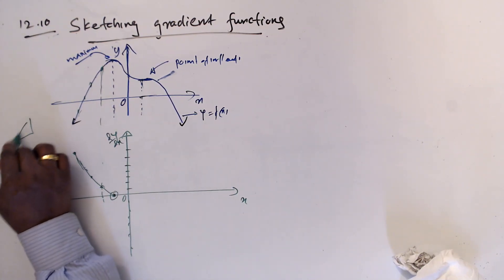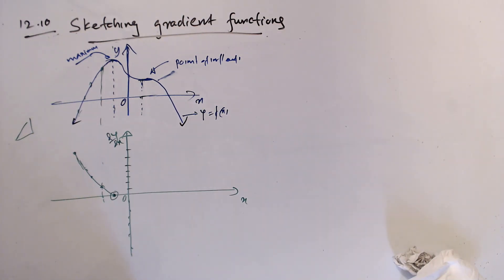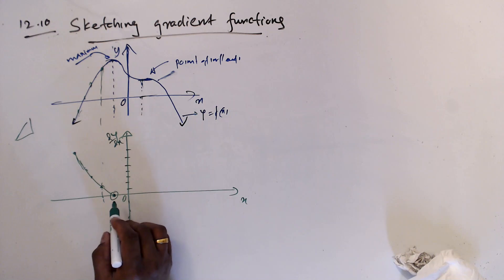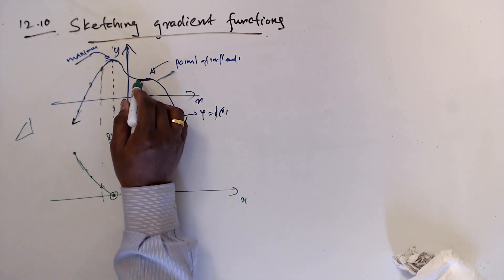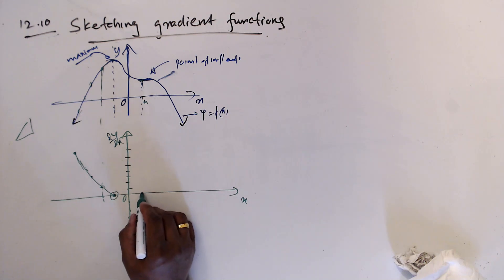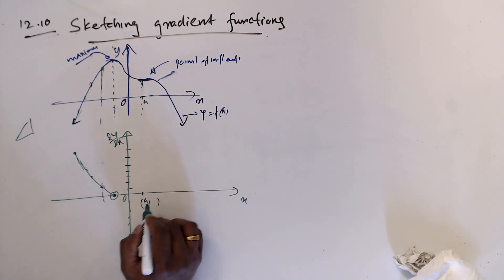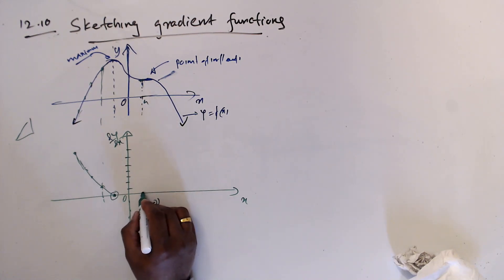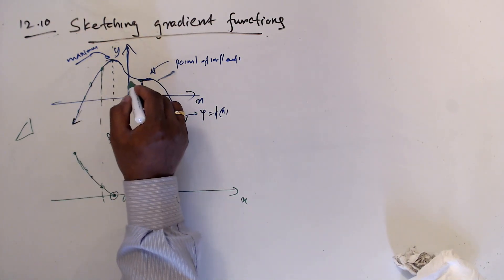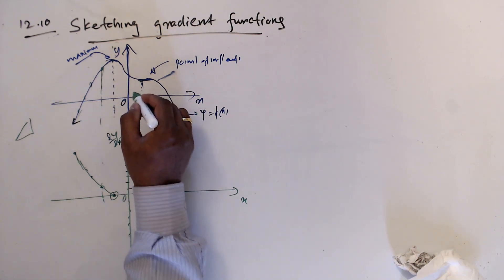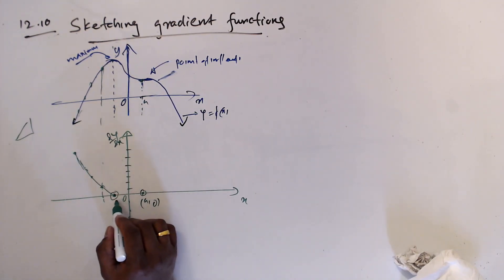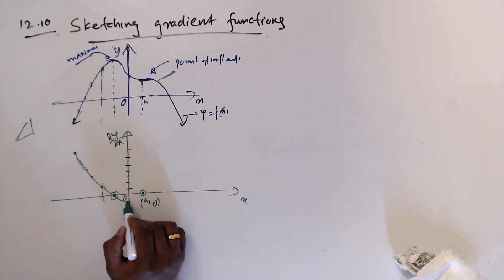Gradient means the ratio of two distances — we're not measuring how far from the x-axis. Now at point b, dy/dx is also zero. To mark a negative gradient, the values go on the negative side, meaning below the x-axis. So the gradient graph comes down to the negative side.